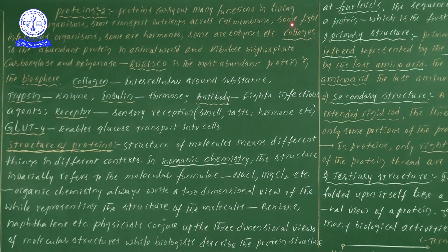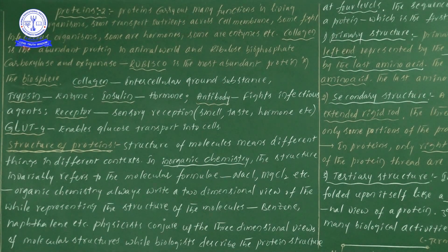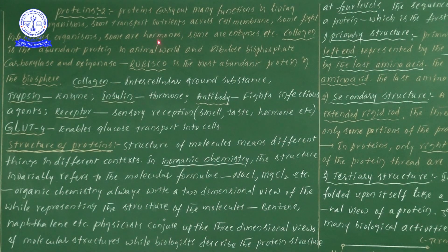Some kind of proteins help for fighting against infectious organisms. There are also different types — some hormones and some enzymes. From the NEET examination point of view, two important bits are there.